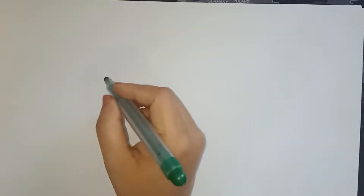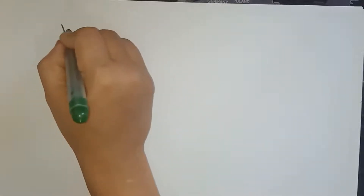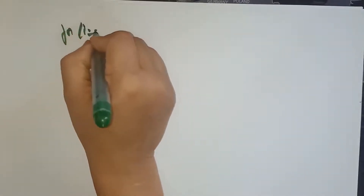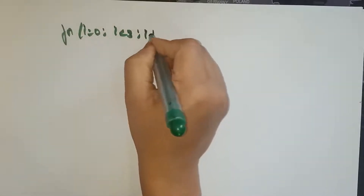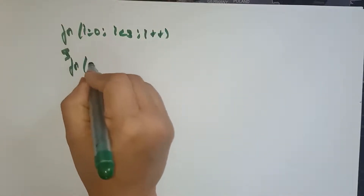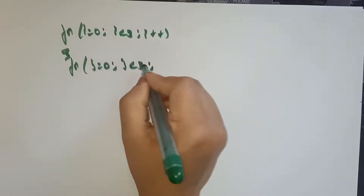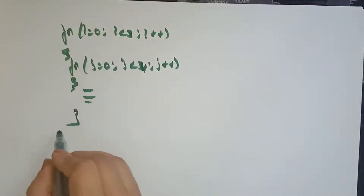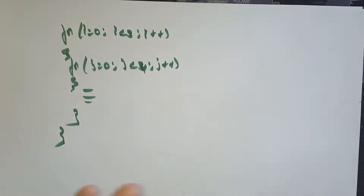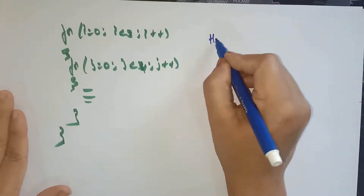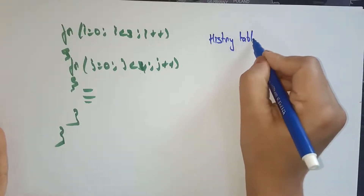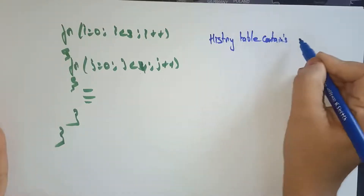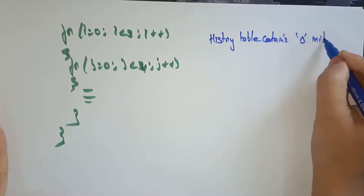Let us consider another example to understand 1-bit dynamic prediction. We have a nested loop: for(i = 0; i < 3; i++) with an inner loop for(j = 0; j < 4; j++). The history table initially contains 0, meaning it starts with not-taken.